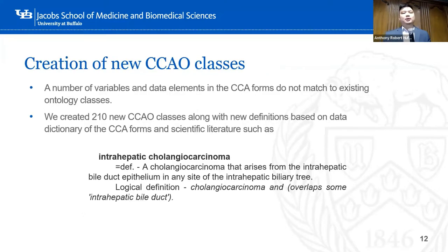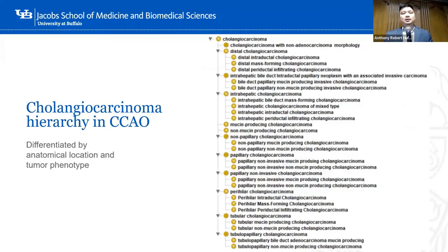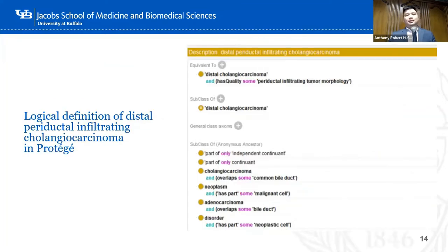We developed about 200 new CCAO classes along with new definitions based on the data dictionary of our CCA forms and literature. For example, this one is the intrahepatic cholangiocarcinoma. The definition is: a cholangiocarcinoma that arises from the intrahepatic biliary epithelium in any site of the intrahepatic biliary tree. It also provides a logical definition. This is the cholangiocarcinoma hierarchy in the CCAO — available on GitHub. And here is a logical definition of a periductal infiltrating cholangiocarcinoma.